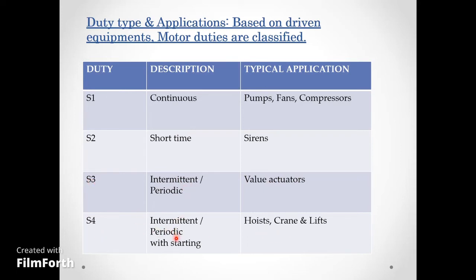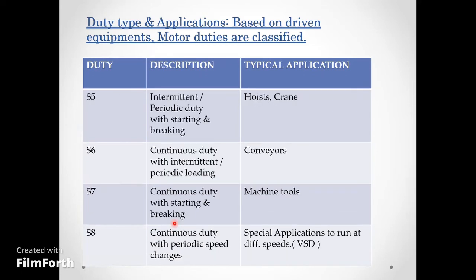S4 is intermittent periodic duty with starting, used for hoists, cranes, and lifts where the motor starts intermittently. S6 is continuous duty with intermittent periodic loading, used for conveyors. S7 is continuous duty with starting, used for machine tools. S8 involves variable speed drives for special applications.